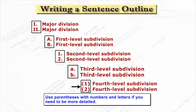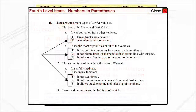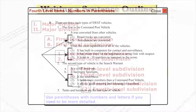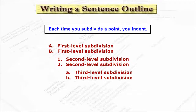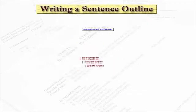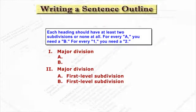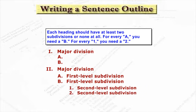Use parentheses with numbers and letters if you need to be more detailed. Each time you subdivide a point, you indent. Each heading should have at least two subdivisions or none at all. For every A, you need a B. For every 1, you need a 2.